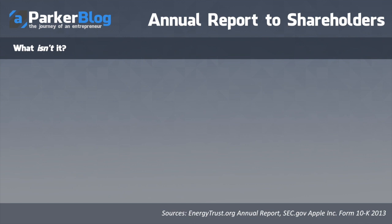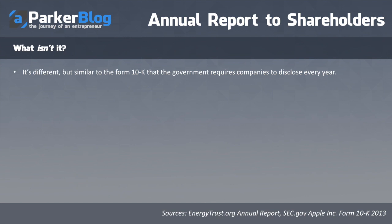Let's take a quick look at what it isn't. It's a little different from a Form 10-K, which the government requires companies to disclose every year. The 10-K looks like a bland tax-style form — just numbers, nothing fancy. The annual report to shareholders, by contrast, is compared to marketing material: very fancy, with the brand story, marketing lingo, and mission statement — all designed to make people feel good about the company.